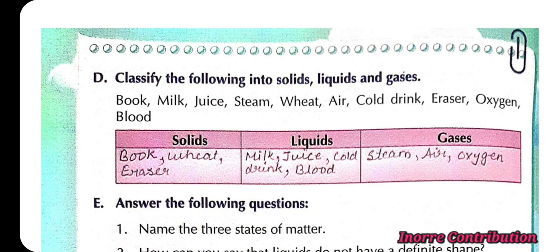Next one, D, classify the following into solid liquids and gases. So, solid items: book, wheat, eraser. Liquids: milk, juice, cold drink, blood. Gas: steam, air, oxygen.